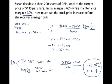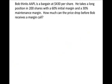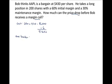Now let's look at somebody taking a long position in the same stock. Bob takes a long position at $430 a share with 60% initial margin. How much can the price drop before Bob gets a margin call? When he buys into the position, the total cost is 200 shares times $430, which is $86,000. He puts up 60% of that, or $51,600. He owes his broker 40% of $86,000, which is $34,400.